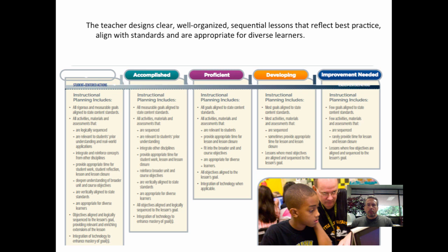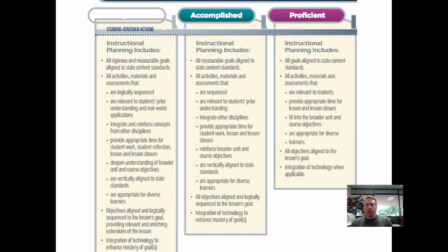The first dimension, Dimension 1.1, is that the teacher designs clear, well-organized, sequential lessons that reflect best practice, align with standards, and are appropriate for diverse learners. You can look through from 'improvement needed' to 'distinguished' at the other end, but administrators have been told that most teachers are going to fall in the proficient range. This is going to be a bit of a change from the PDOS, where we often saw some inflation in regard to performance, but now most teachers are expected to be at the proficient range.